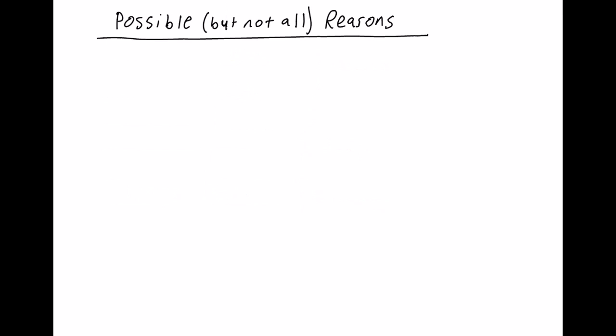I'm going to put a list of reasons that you may use in your proof. These are the ones that will most likely come up — they're really infinitely possible reasons, but I'll put the ones you'll more likely see. One property is the reflective property, which says AB is congruent to BA — the line segment is congruent to itself, just written differently. It's possible you may need to use that one just to state that something is congruent to itself.